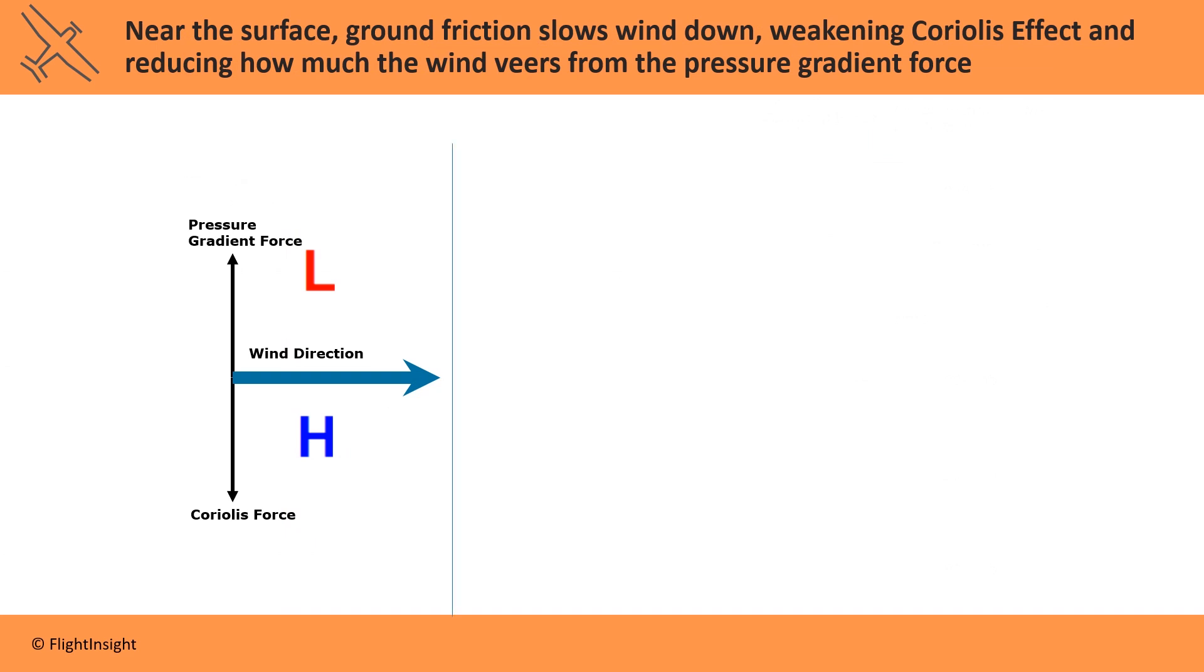Winds near the surface have a third force affecting them. Ground features like terrain and obstructions cause friction which slow the wind down. A slower wind doesn't veer as much, so the Coriolis effect is less.